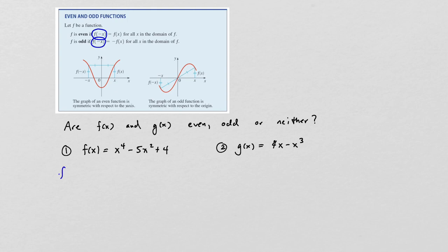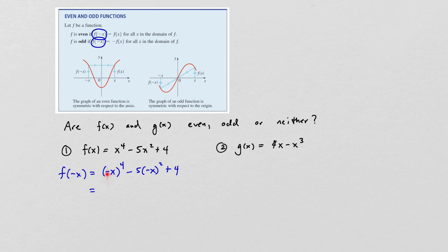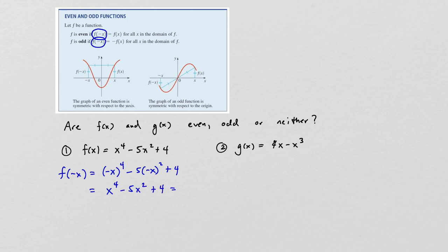To answer this, I need to compute f(-x) — I'm just going to replace x with -x and then simplify. Now, (-x)⁴ is x⁴ because when you raise a negative to an even power, the negative goes away. Likewise, (-x)² is the same as x², so this becomes -5x². Plus 4 stays the same. You should notice that this is exactly the same as what you started with. So f(-x) = f(x), and in that case we say the function is even.